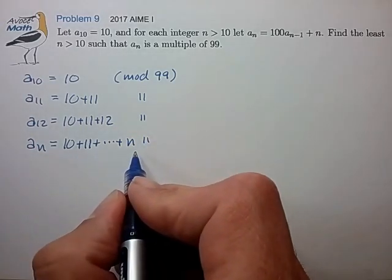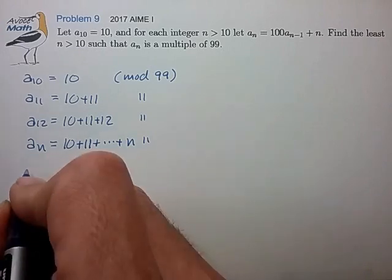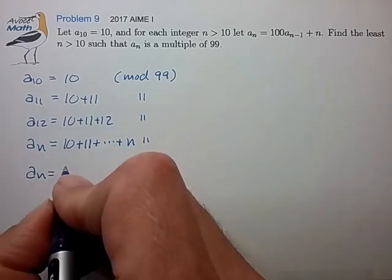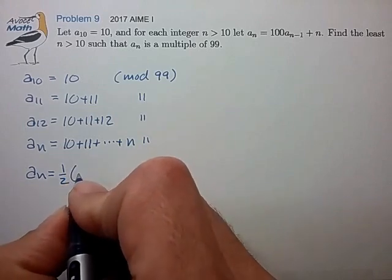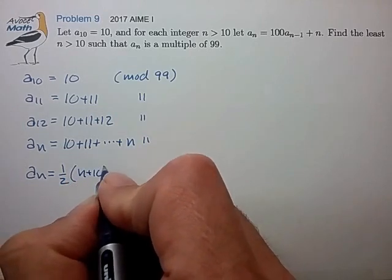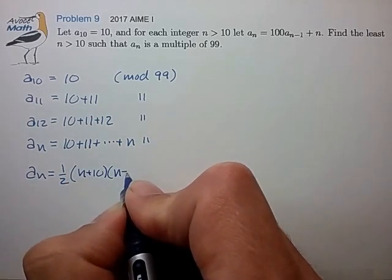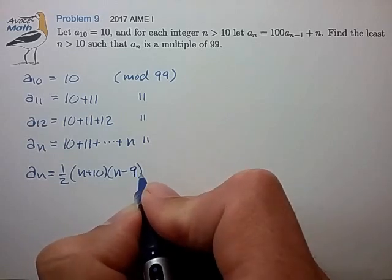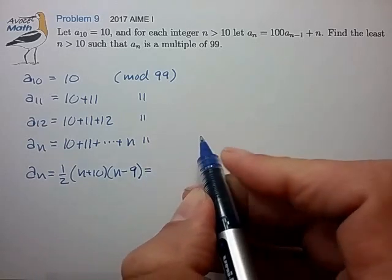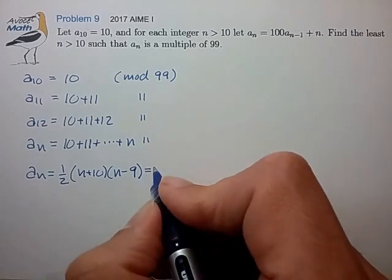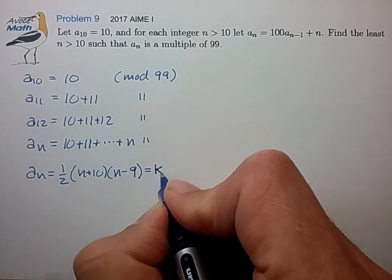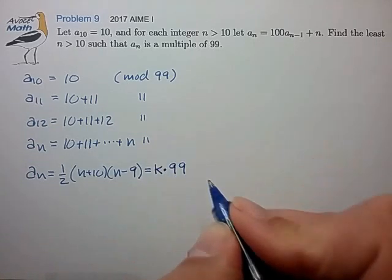If we pull out our formulas for the sum of an arithmetic series, we see that a sub n is equal to one half times n plus 10 times n minus 9, and we're looking for the condition where this is a multiple of 99, so it's some positive integer k times 99.